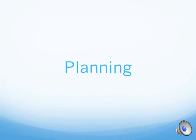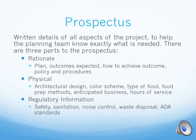Now we'll talk about the planning part of food service management. The prospectus is the first step in planning. It is a written detail of all aspects of the project to help the planning team know exactly what is needed. There are three parts to the prospectus. The rationale includes the plan, outcomes expected, how to achieve outcome policy, and procedures. It is why you want this food service assessment and what the purpose is.